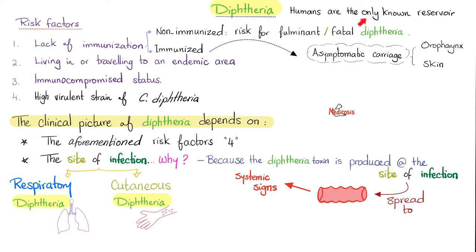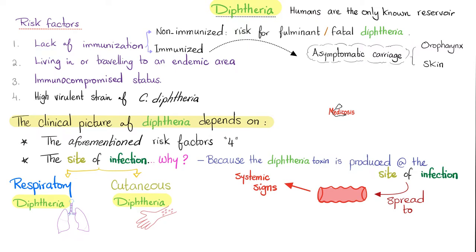Humans are the only known reservoir for diphtheria. The clinical picture — signs and symptoms — depends on those risk factors and the site of infection. The diphtheria toxin is produced at the site of infection, causing respiratory or cutaneous symptoms depending on the site of entry. This toxin can spread to the bloodstream causing systemic signs and symptoms, a state called toxemia — not to be confused with bacteremia, which is bacteria in the blood. They are not the same.